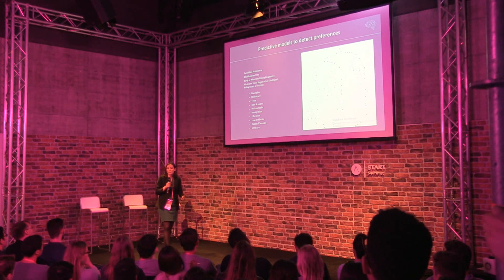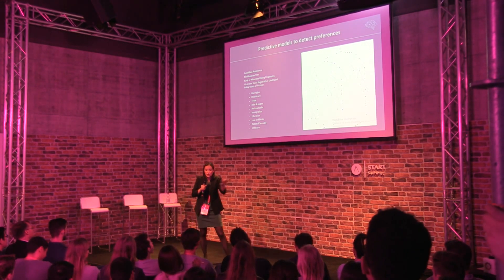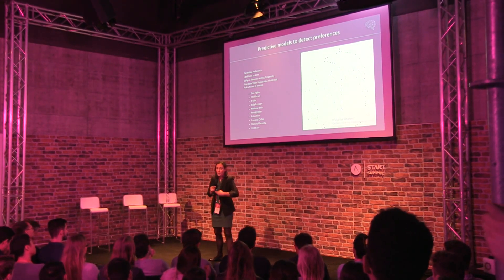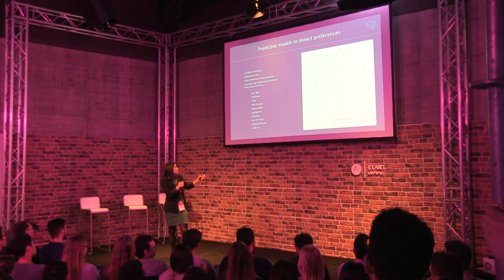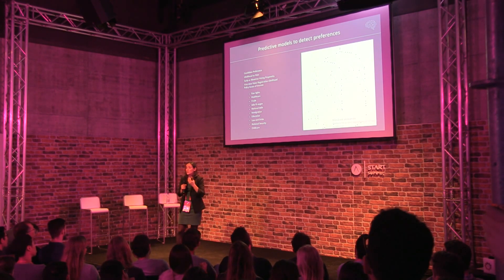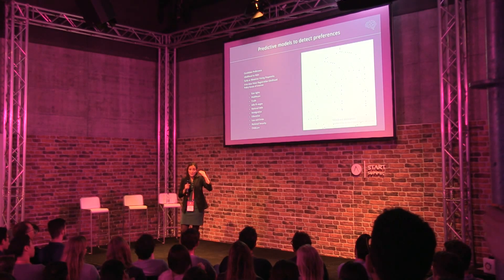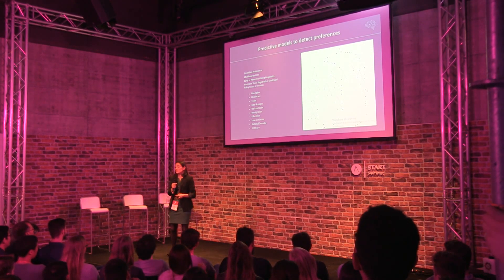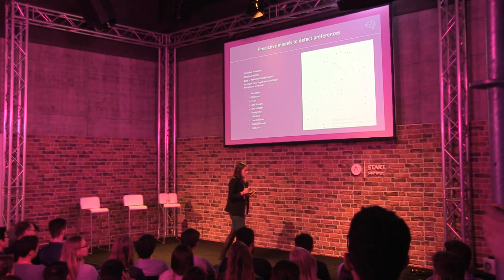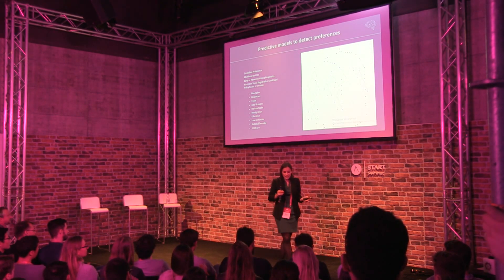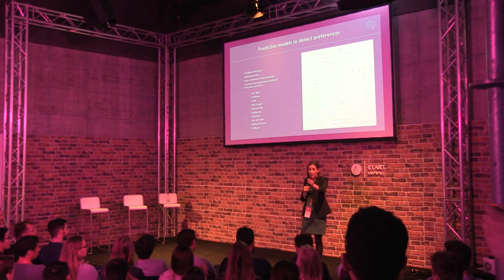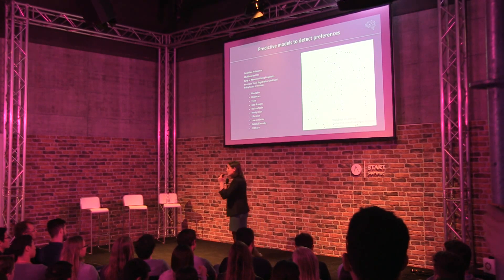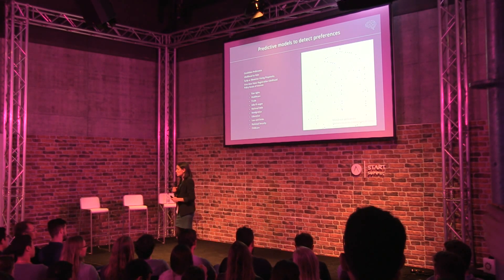Other models we built included likelihood to vote — there's no point sending you a message if you're never going to vote no matter what I say, so I'm not going to spend resources on you. Then early and absentee vote models — who do we need to target first before they go to the polls? And also policy issues of interest, so we can present the candidate's position on an issue you care about. It's about making the candidate able to talk to each individual about what they're actually interested in.